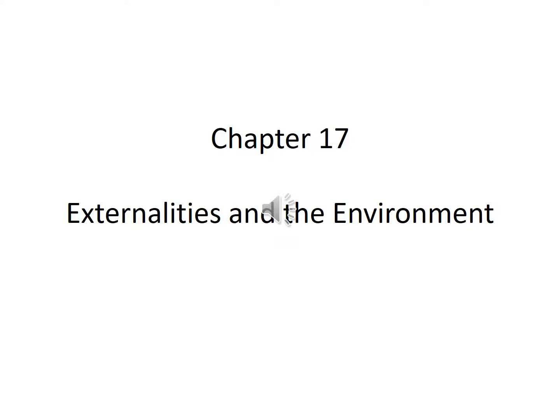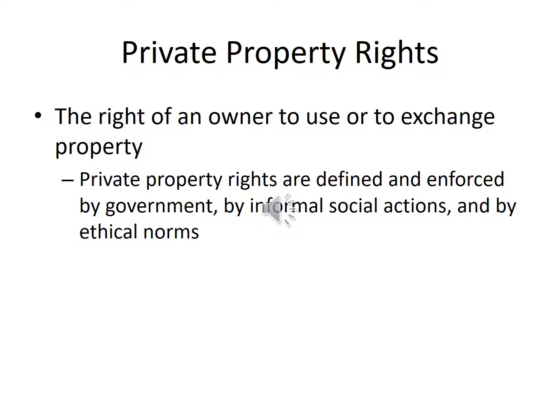Chapter 17: Externalities and the Environment. Private Property Rights — the right of an owner to use or to exchange property. Private property rights are defined and enforced by government, by informal social actions, and by ethical norms.